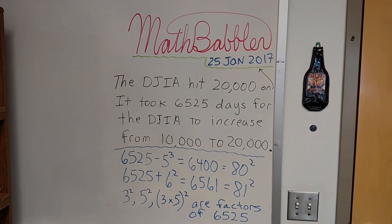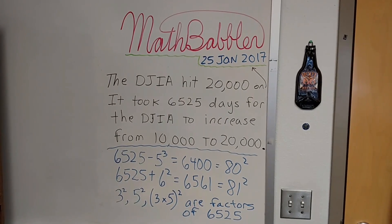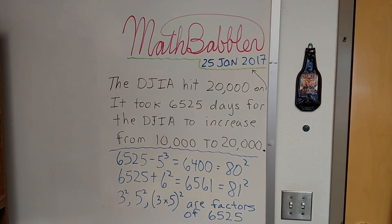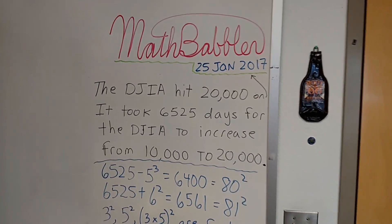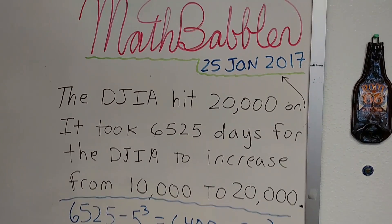Hello. It's January 25th, 2017. I'm doing a MathBabbler bit. The Dow Jones Industrial Average hit 20,000 today on 25 January 2017.